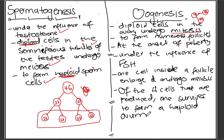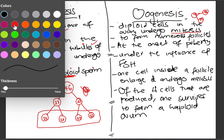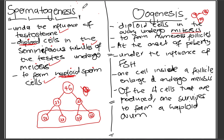That's everything for five marks. You just need to write the whole thing to make sure you have fully described the process. Here is how it would be marked: diploid cells in the ovary undergo mitosis — first mark. At the onset of puberty — second mark. Under the influence of FSH — third mark. One cell inside the follicle undergoes meiosis — fourth mark. From the four cells produced, only one survives to form a haploid ovum — fifth mark.